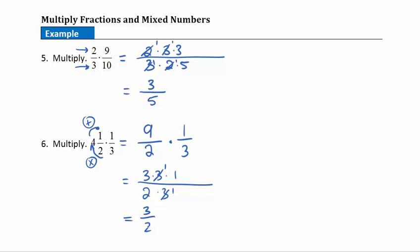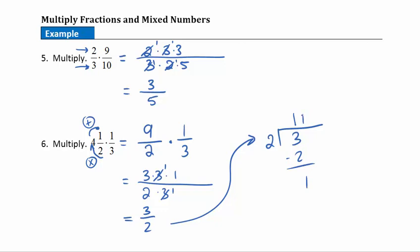I'm ending up with an improper fraction, meaning the numerator is bigger than the denominator, so this fraction is actually larger than 1. Some instructors will want you to leave it as 3/2. Others might want you to write it as a mixed number. This is a division problem: 2 goes into 3 one whole time, with a remainder of 1. So as a mixed number that's 1 and 1/2. Depending on what your instructor wants, either answer is correct.